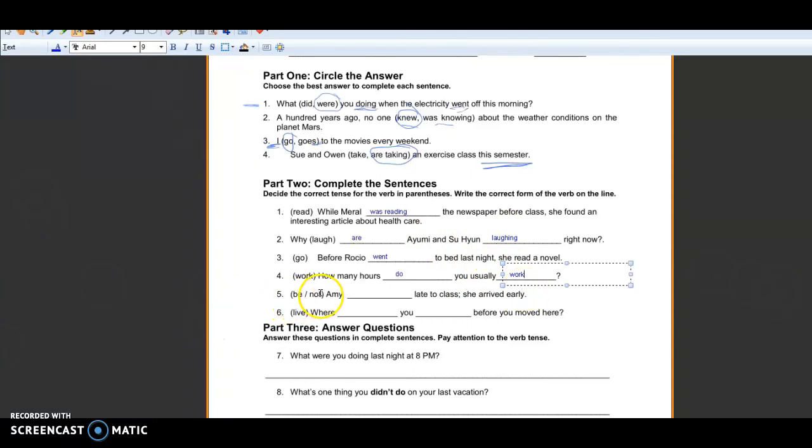Number five Amy late to class she arrived early. So here we have a verb in the simple past arrived so we probably need the other verb in the simple past too. So what is the past of be? The past of be is was or were but we have Amy which is she so we have to say she was, but here we need to put was not so we can either add it in like that just by saying those two words was not or we could say wasn't in the shorter way.